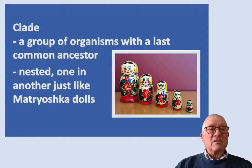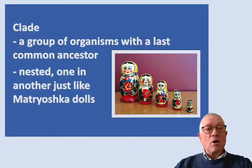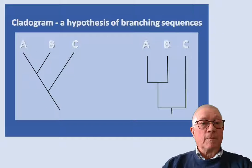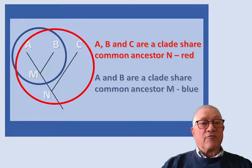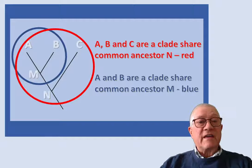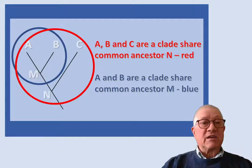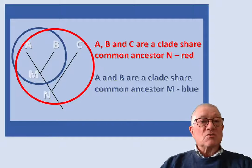A cladogram is a branching sequence that shows relationships of organisms based on a common ancestor. There is more than one way to draw these — I have illustrated a couple of the common ways here. If we consider organisms A, B, and C, we can see that they form a clade because they share the common ancestor N, shown in red. We can see that A and B form a clade because they share the common ancestor M, shown in blue. We can also see how one clade is nested in another.